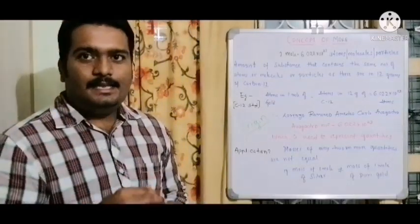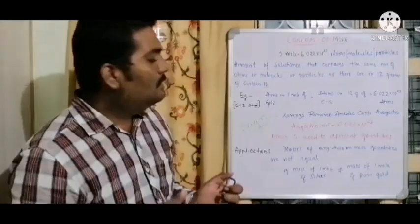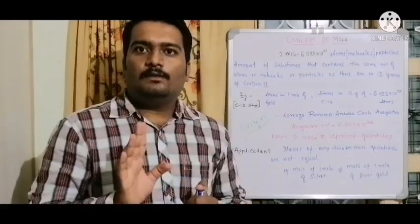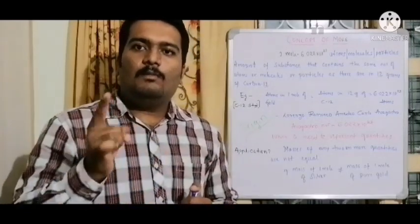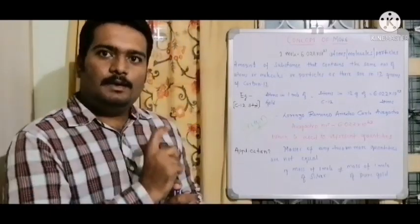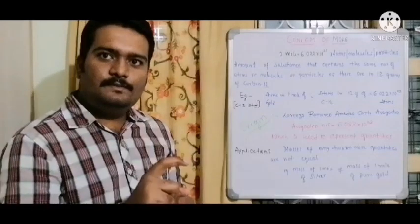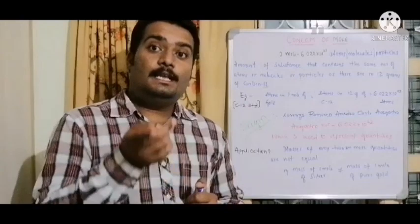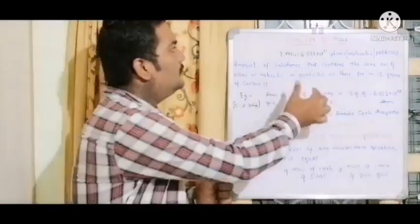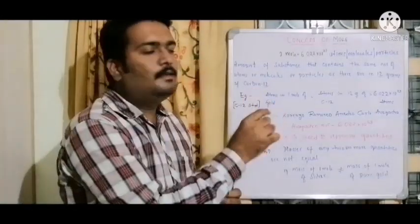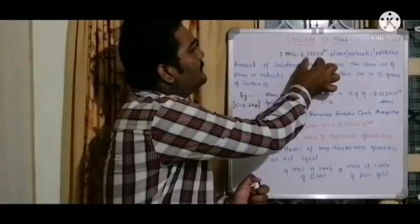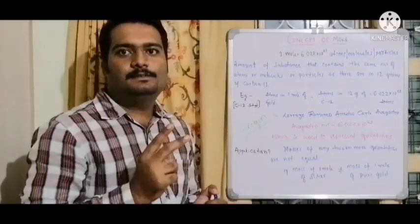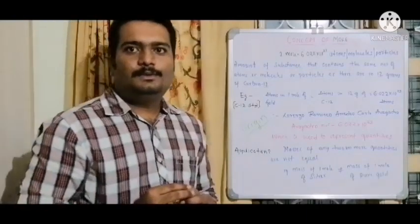For example, the mass of one mole of silver is not equal to the mass of one mole of gold, because their molar masses differ. However, when it comes to numbers — the Avogadro number — one mole of silver and one mole of gold have the same number of particles, because the number of particles remains the same for both metals.